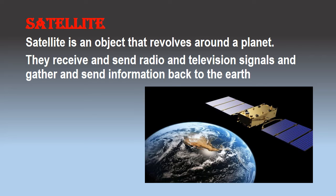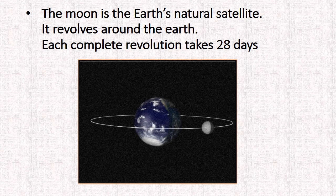Satellite is an object that revolves around a planet. There are two types of satellites: artificial satellites and natural satellites. An artificial satellite is an object that has been intentionally placed into orbit. They are used for all sorts of purposes like communication, navigation, weather forecasting and many other purposes. They receive and send radio and television signals and gather and send information back to the earth. The earth's natural satellite is the moon. The moon revolves around the earth and completes one revolution in 28 days.